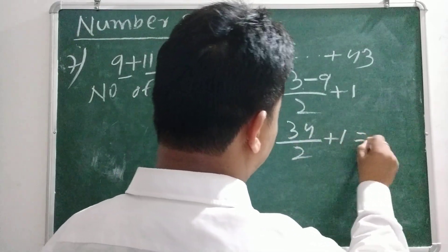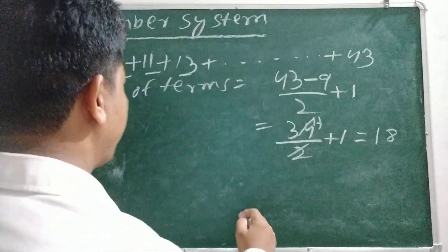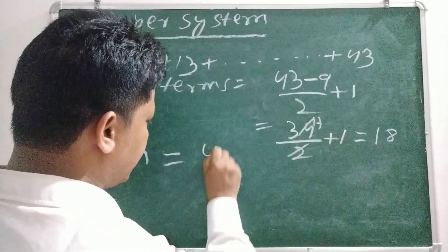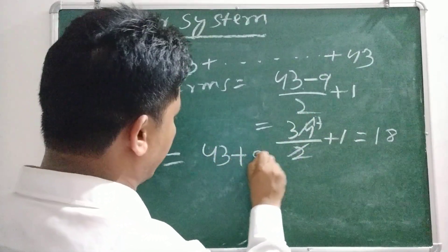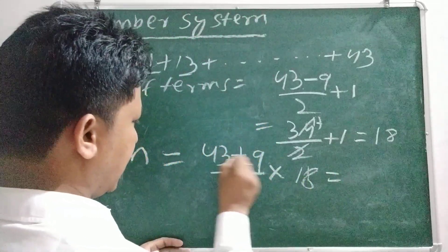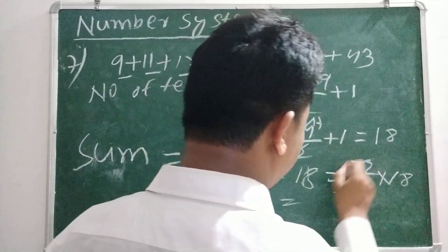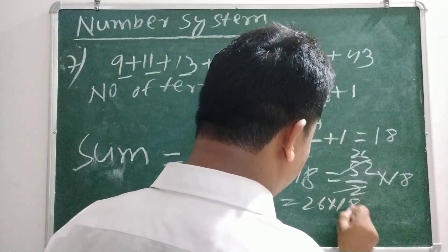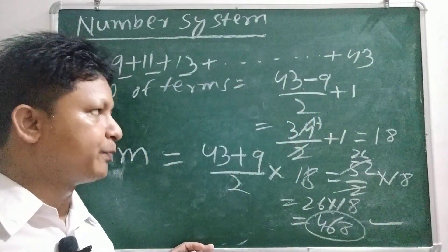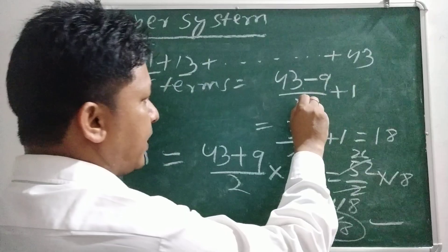7 plus 1 equals 8, so the number of terms is 8. The sum is equal to last number 13 plus first number 9 by 2, into number of terms 8. Number of terms equals 8, so the sum equals 4 into 117, giving the answer 468. Number of terms equals last number minus first number, by difference, plus 1.